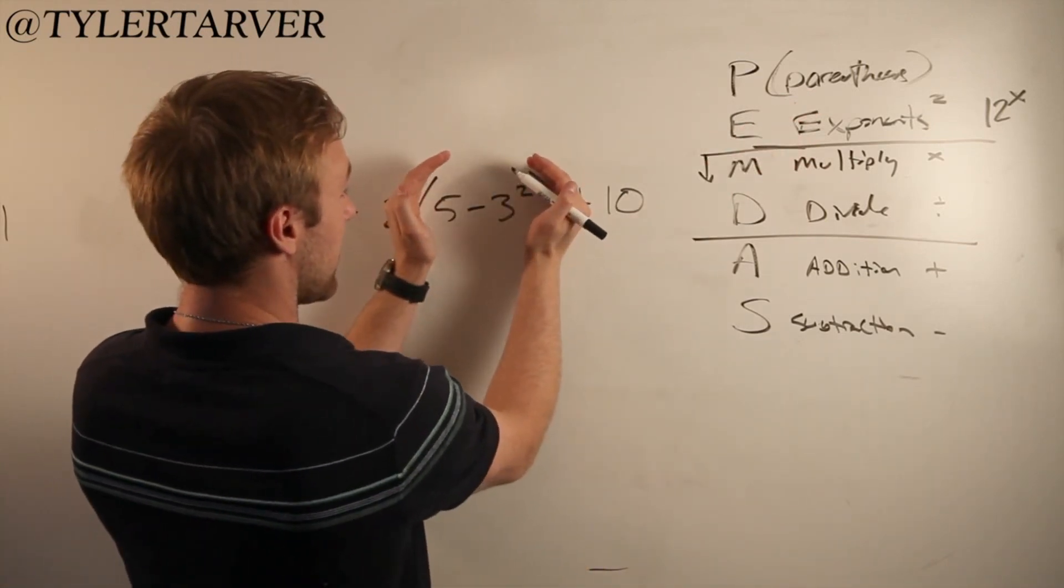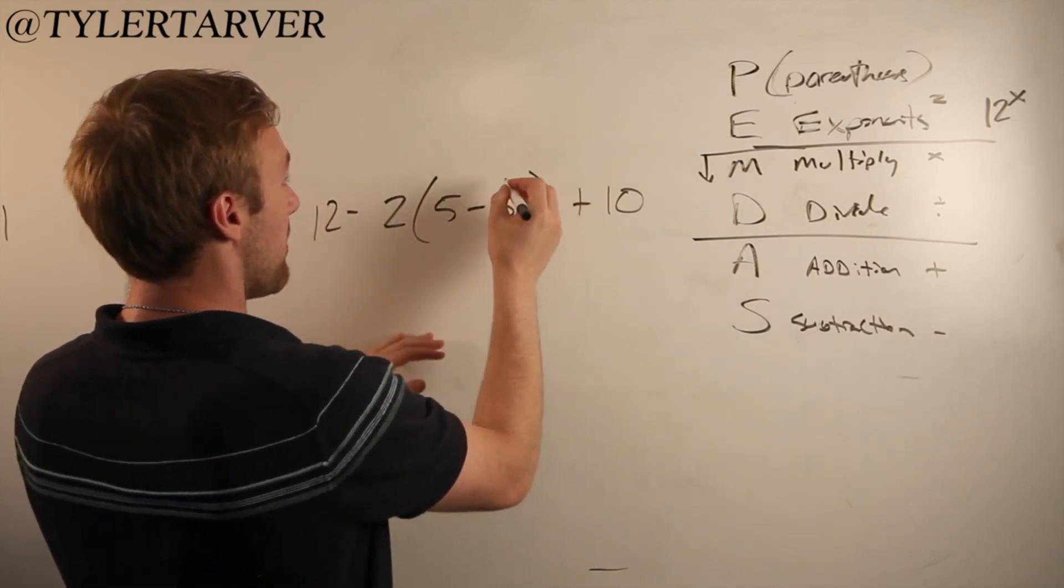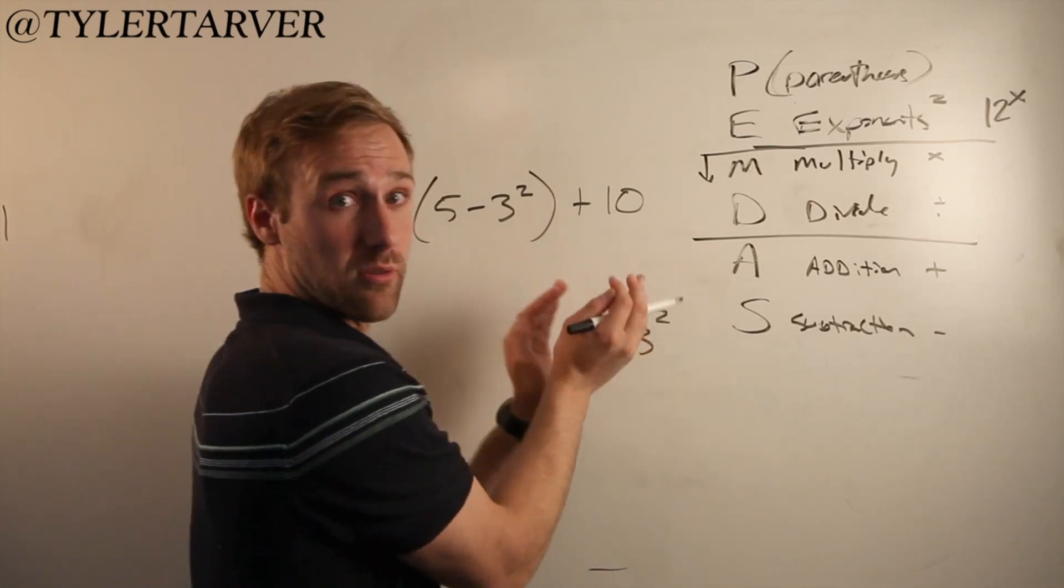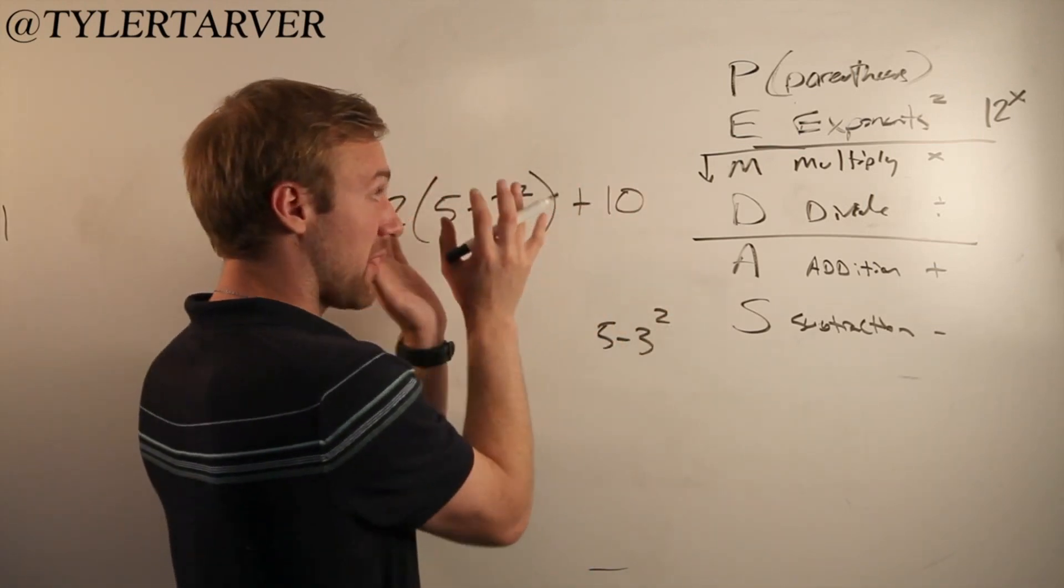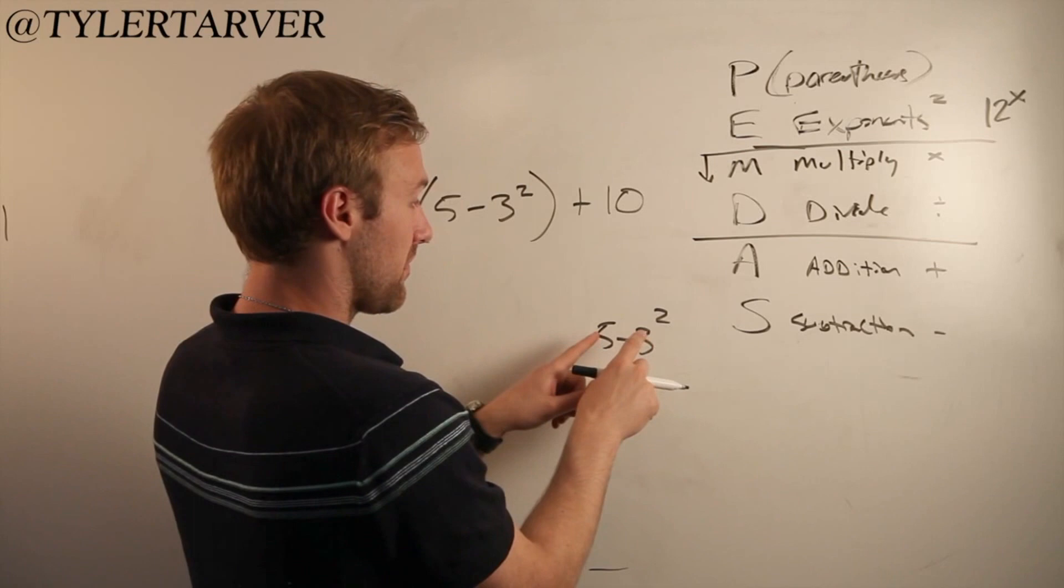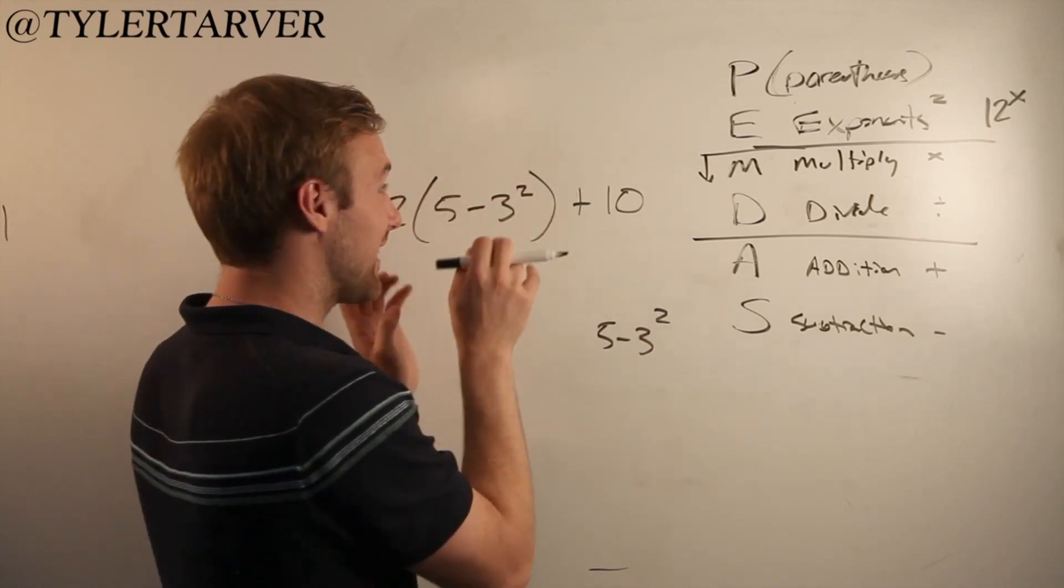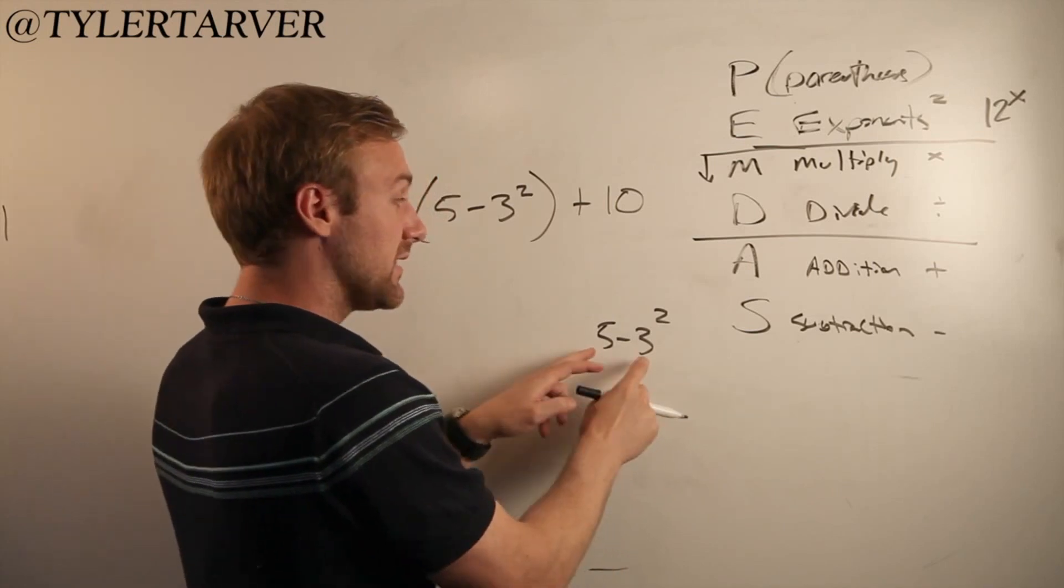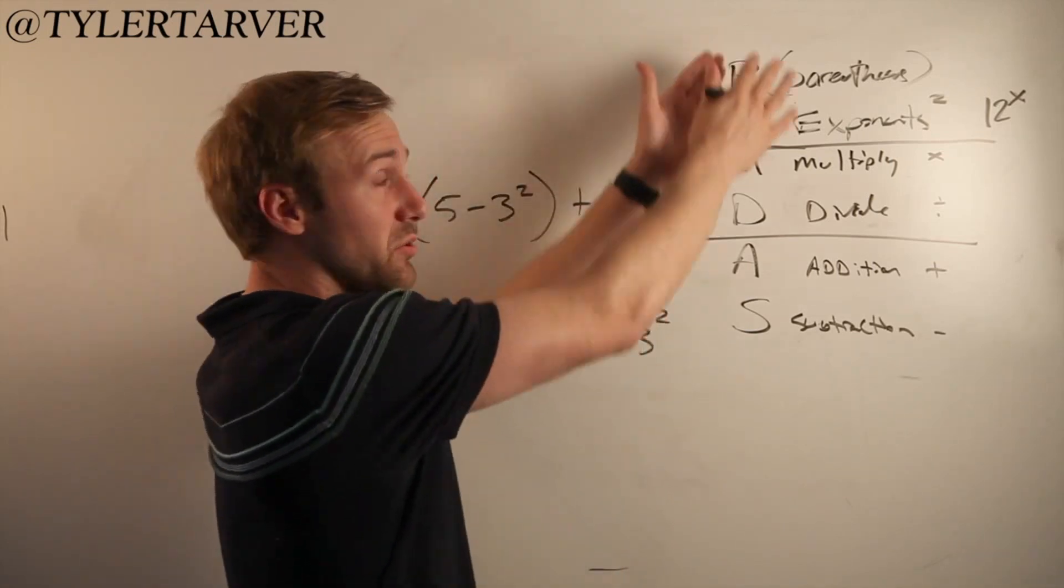That would be this. That means I need to look at this problem by itself: 5 minus 3 squared. The most important thing in this problem is my first set of parentheses. I need to solve it as much as I can, and then I can move on. Inside the parentheses, now we essentially do this all again.